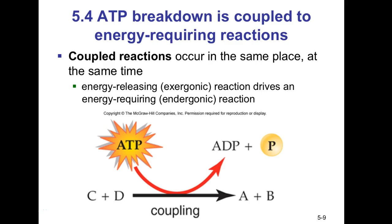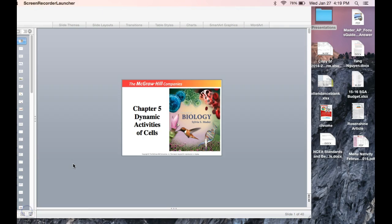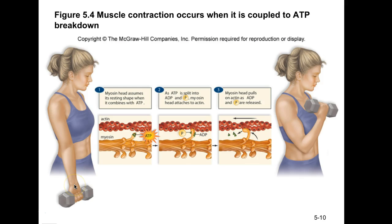ATP helps couple reactions — those coupled reactions occur in the same place at the same time. Energy-releasing exergonic reactions drive energy-requiring endergonic reactions. For example, muscle contraction occurs when it is coupled to ATP breakdown.